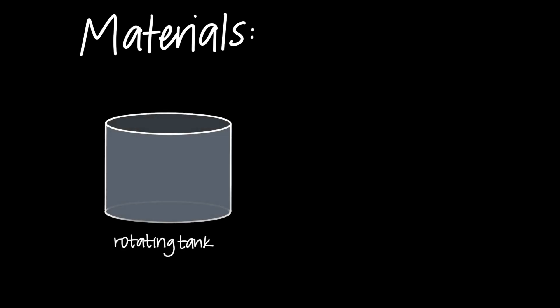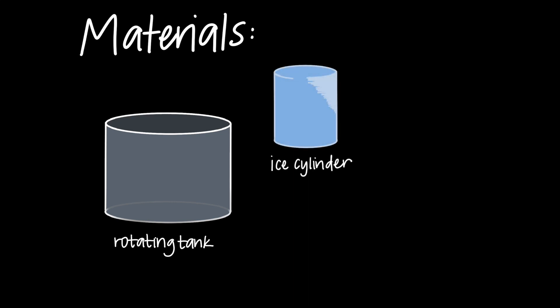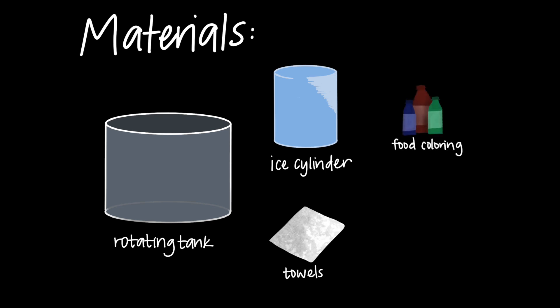One rotating tank that was built for the Atmospheric and Oceanic Sciences Department at UCLA. A large frozen ice cylinder, which will represent our glacier. Some towels so that the ice cylinder stays in place. Food coloring so we can better see the circulation inside the tank, and some pipettes to make putting in the food coloring a little bit easier.